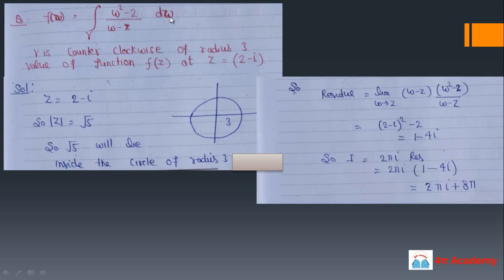The pole is at omega minus z = 0, so we find the residue at omega = z. The formula is the limit as omega tends to z of (omega minus z) times (omega squared minus 2) upon (omega minus z). The (omega minus z) terms cancel, giving omega squared minus 2 evaluated at z = 2 − i, which is 1 − 4i. The value of f(z) = 2πi times the residue = 2πi(1 − 4i) = 2πi + 8π.